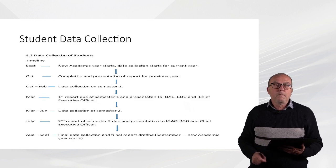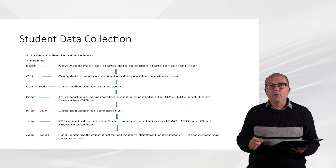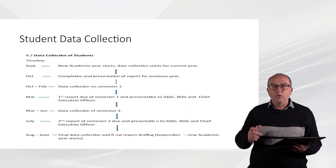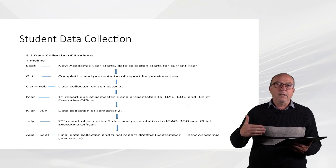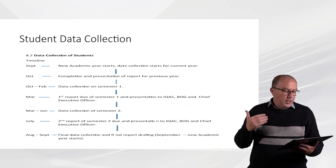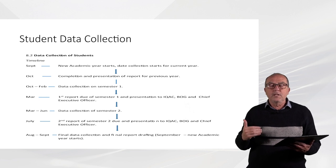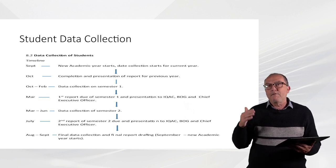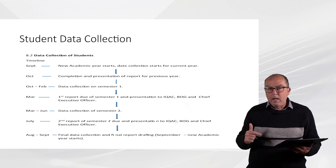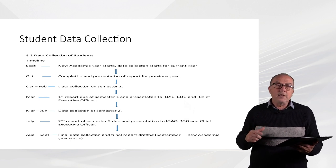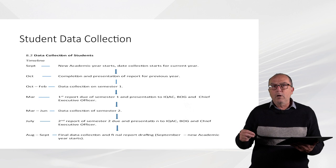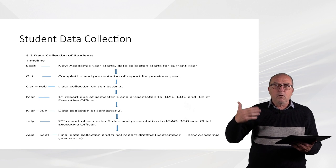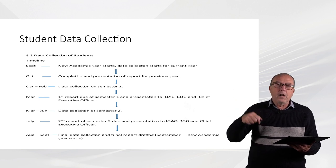I'm going to give you a case of the Institute of Tourism Studies — how we collect the data as part of information management, and we do monitor it throughout a calendar year. In September, when the scholastic year starts, the institution through the registrar's office collects the data for the current year. In October, there is a completion of the report of the whole previous year, and in the meantime we are still collecting data of the current year.